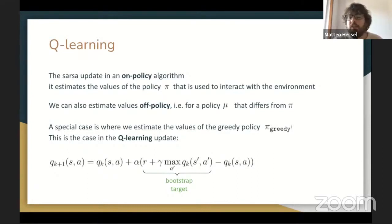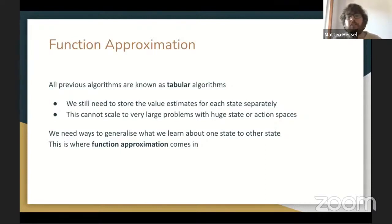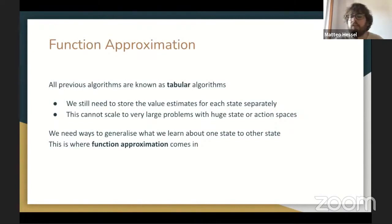All the algorithms so far are known as tabular algorithms — they store value estimates for each state or state-action pair separately. While this is linear in the number of states, it's still not scalable to really large, complex problems. In order to make these algorithms feasible at large scale, we need a way to generalize what we learned about one state to other states. This is a well-studied problem in machine learning: function approximation and generalization. We need to combine function approximation literature with RL ideas to get a fully scalable algorithm.